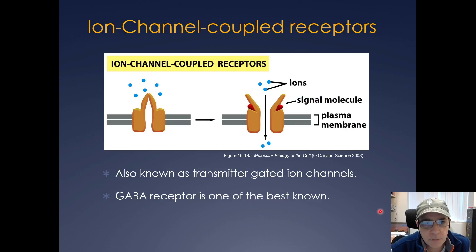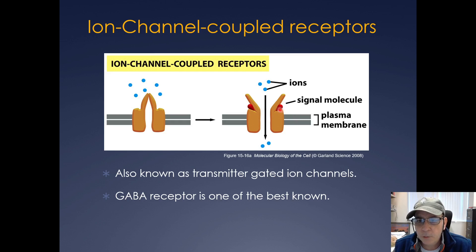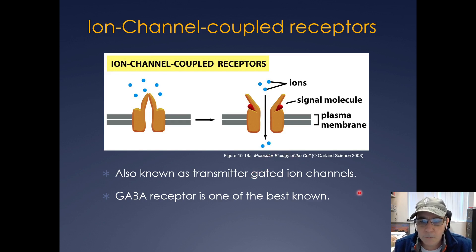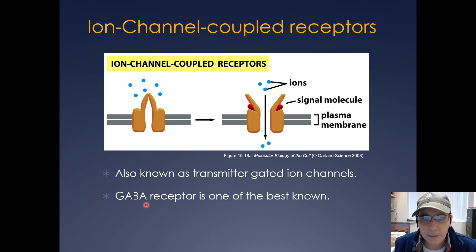You can also have ion-channel coupled receptors — a signaling molecule causes a conformational change in the ion channel, which opens up, allowing passive diffusion of ions down the chemical gradient. There are many of these ion channels; a really well-known one is GABA. We'll talk about GABA later when covering nerve cells and synapses.